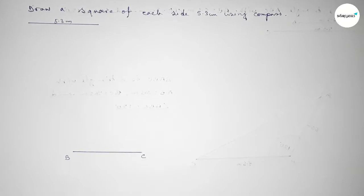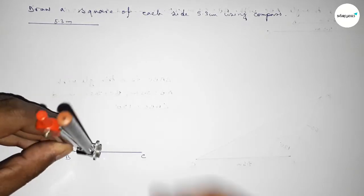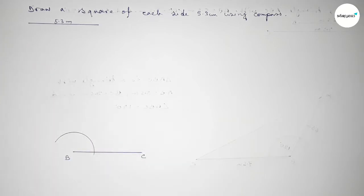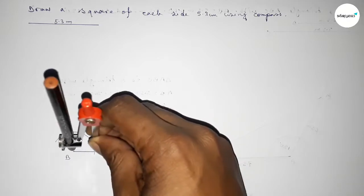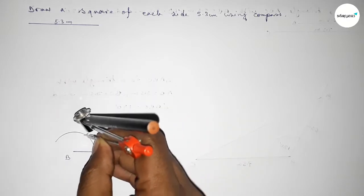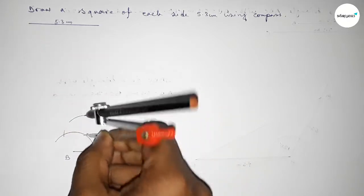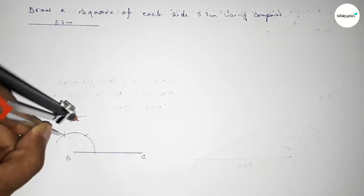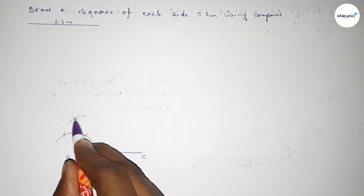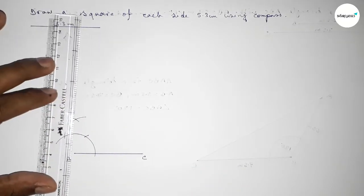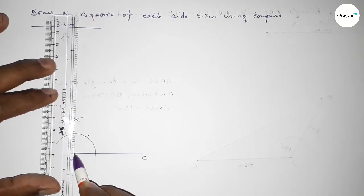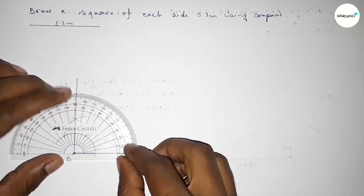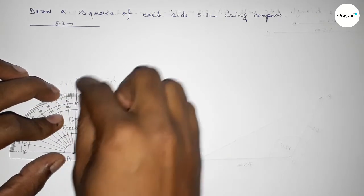Now we have to draw a 90 degree angle at point B. Putting the compass on point B and taking any length, we draw an arc. With the same length, we place the compass at the arc intersection points and cut arcs. Both curves intersect at a point. Joining this point to B gives us a 90 degree angle — and checking confirms this is perfectly a 90 degree angle.